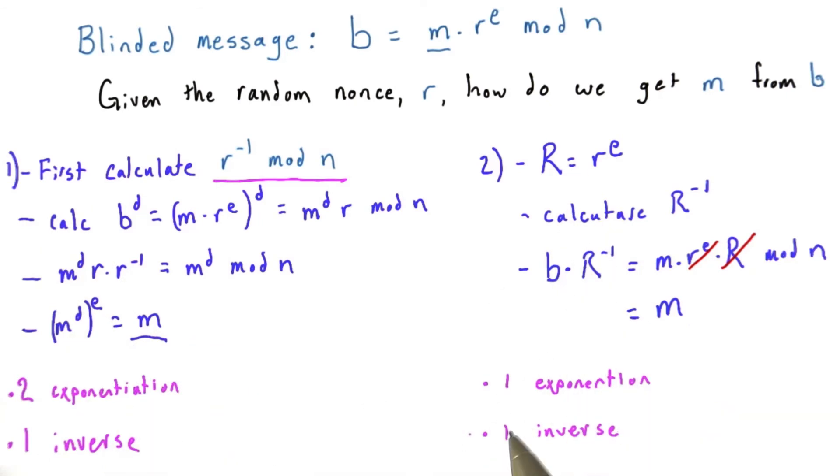Comparing the two ways, the second way is quicker. It only involves one exponentiation and one inverse, whereas the first way requires two exponentiations and one inverse.